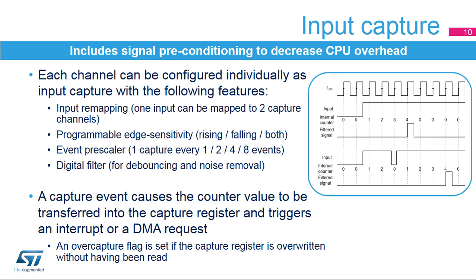Once the capture trigger is issued, the timer's counter is transferred into the capture register and an interrupt or DMA request can be issued. If a new capture occurs before the previous one has been read, the capture register is overwritten and an overcapture flag is set for the software to manage this condition if needed.